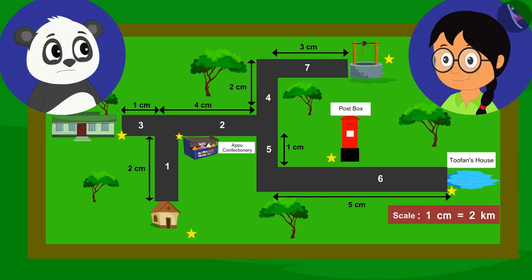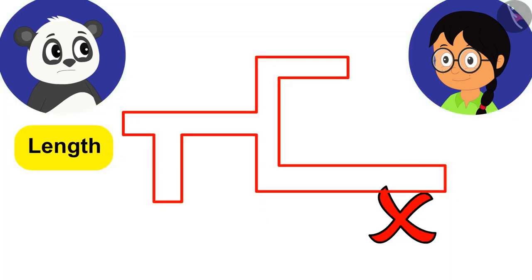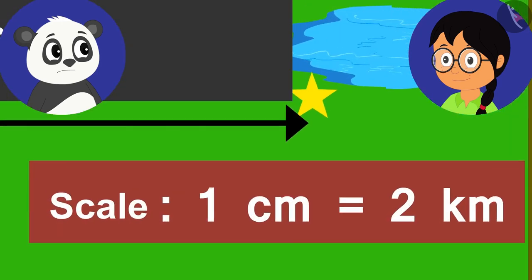Meenu is explaining to Golu that because in reality paths are really long, we cannot show their length on a small paper. Therefore, we use scale.